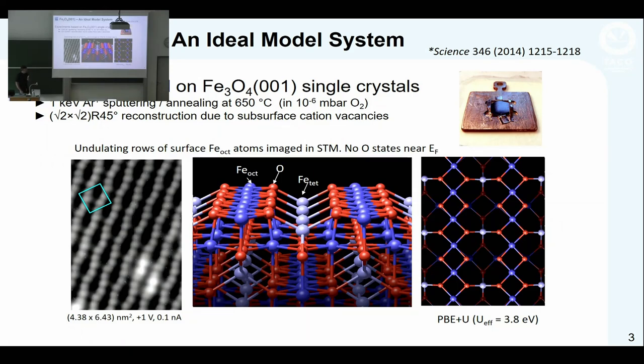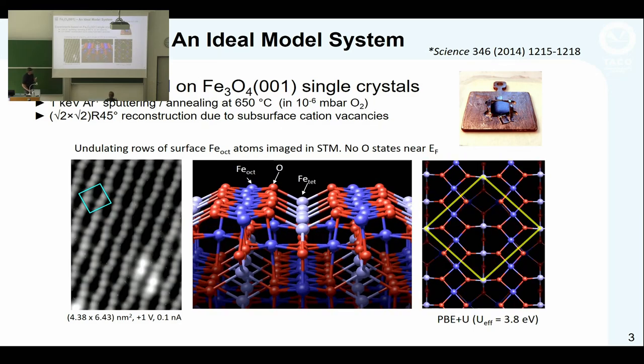The great thing about convincing Ellen and Karen to work on spinels is that we already have a model system. We take iron oxide single crystals, sputter them in ultra-high vacuum with argon, then anneal in oxygen. What we get in STM is an image that looks like this, showing rows of iron cations that aren't perfectly straight because the surface reconstructs.